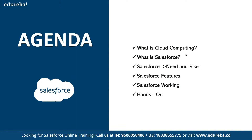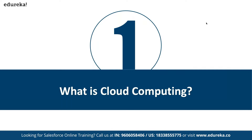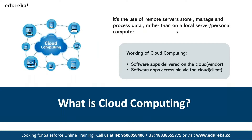Cloud computing, in simple terms, is simply using someone else's infrastructure. We can define what kind of infrastructure we need and subscribe to that, paying only for the time period we use it. We can choose the number of cores, the amount of RAM, bandwidth, and pre-configured services. There's no upfront cost — the entire costing is based on a pay-as-you-go model.